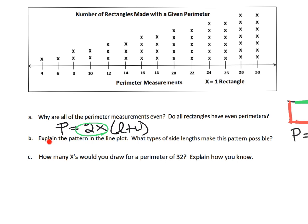The next question: explain the pattern in the line plot. What types of side lengths make this pattern possible? The pattern is the line plot values are 4, 6, 8, 12 — they're all even numbers. What types of side lengths make this possible? Well, we're dealing with whole numbers. We're only dealing with those centimeter squares, so the length and the width are always whole numbers. That's why we keep getting the kinds of answers that we're getting.